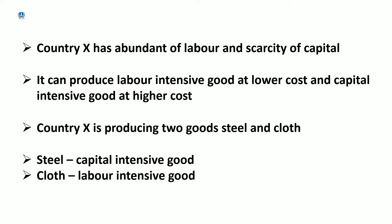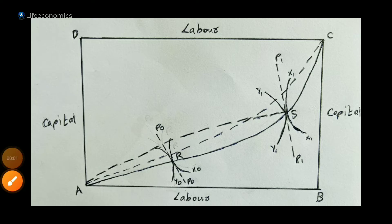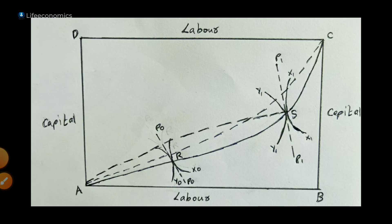Now I have to explain the diagram. We can state the diagram — the Edgeworth box diagram with corners A, B, D, C. The curve will explain the contract curve within the box diagram.